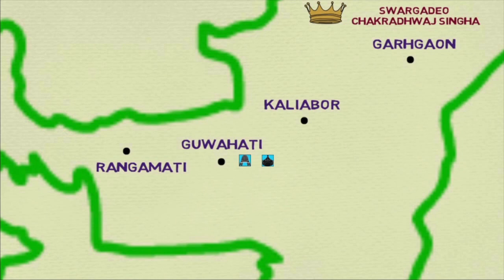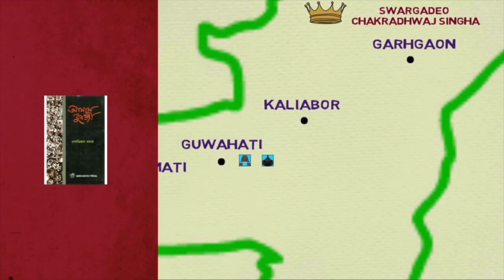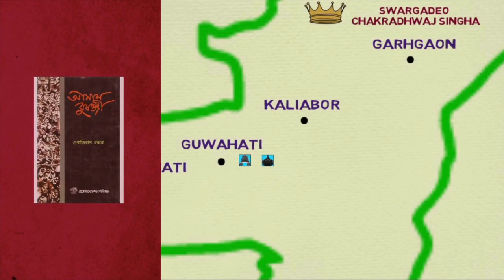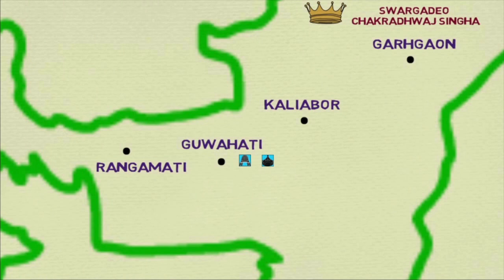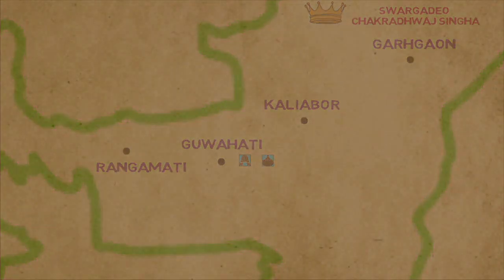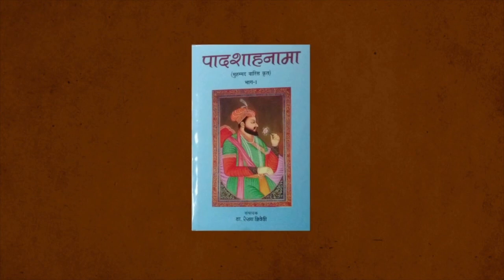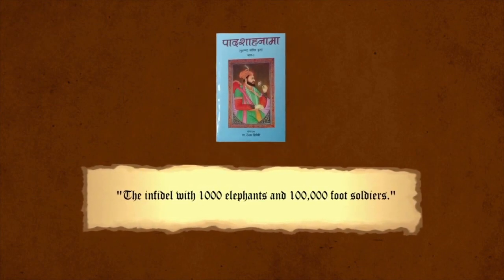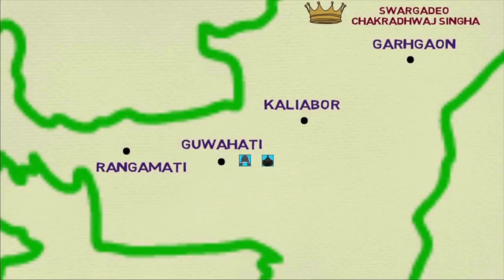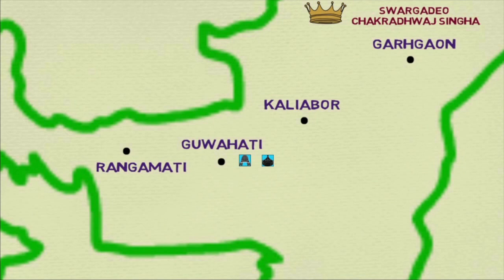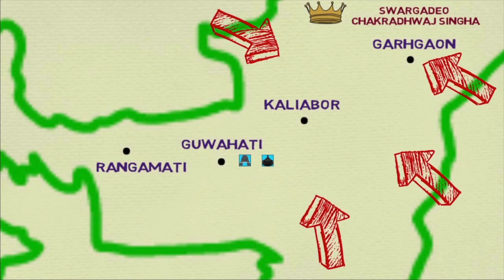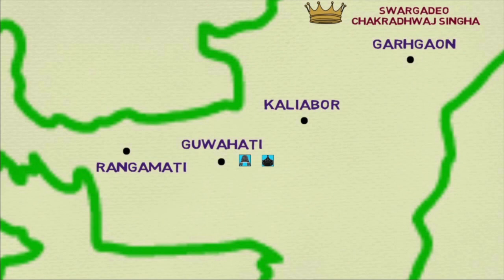There are no records of the strength of the Ahom forces at that time. Most of the facts mentioned so far are from the Ahom court chronicles or Burangis — that's where the name of this channel comes from. The Burangis do not talk about the number of soldiers in the Ahom army under Lachit Borphukan. However, the Padshahnamas or Mughal court chronicles refer to the Ahom monarch as 'the infidel with a thousand elephants and hundred thousand foot soldiers,' suggesting the entire Ahom army numbered around one hundred thousand.